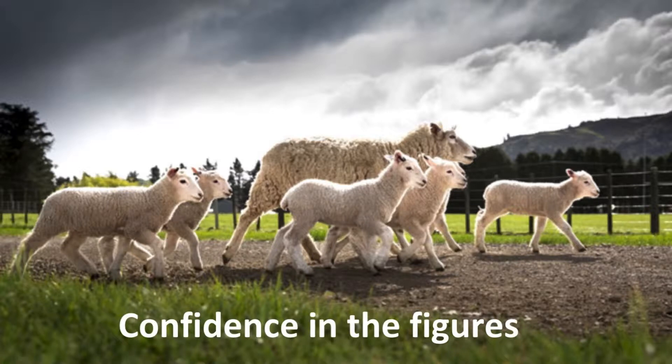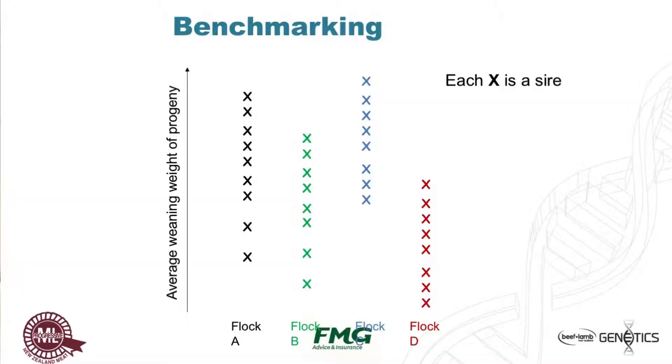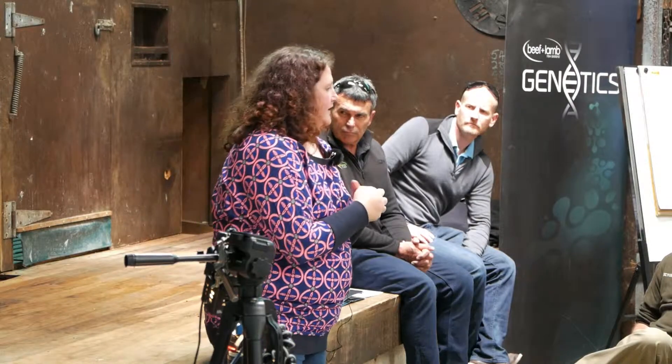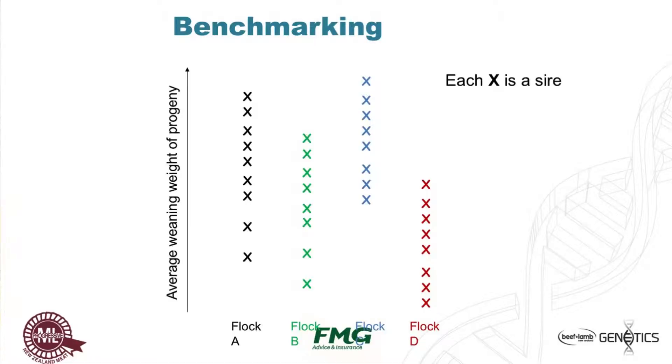How do we have confidence in those figures being right? If I think about some rams all denoted by an X, with average weaning weight on the graph up the side, and I've got flocks A, B, C, and D — I want to go find a fast-growing ram to get lambs really heavy at weaning. I might pick flock C. But is flock C just a better feeder? Is it a less challenging environment? Does it have the same stocking rate I have? There might be a number of reasons why those rams appear different.